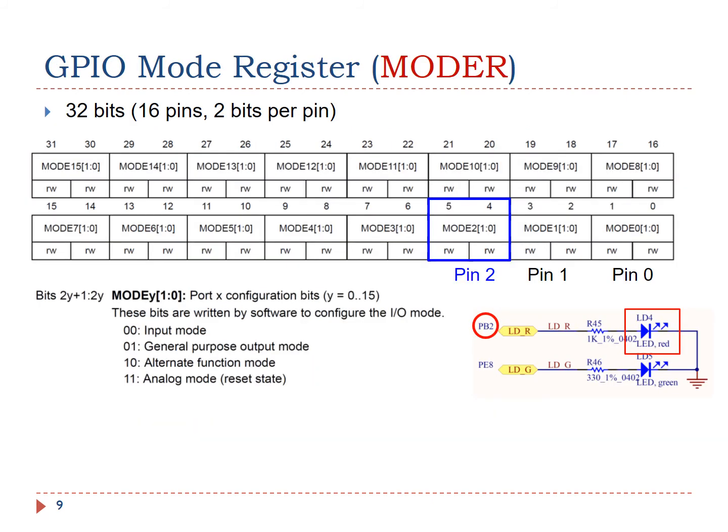Software can program each GPIO pin as one of the following four different functions. First, digital input, which detects whether an external voltage signal is higher or lower than a predetermined threshold. Second, digital output, which controls the voltage on the pin.